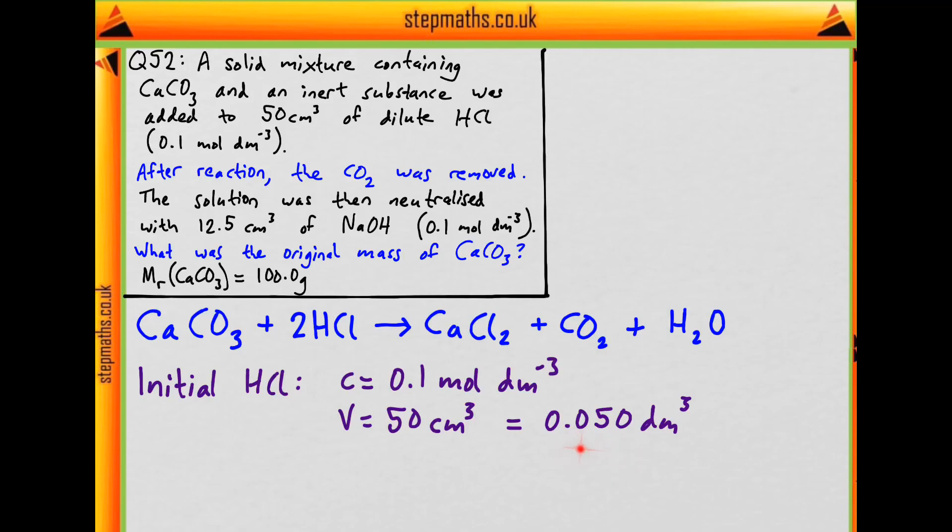How do we work out the number of moles from this? Remember that n equals cv. So putting the numbers in gives 0.1 mol per dm³ times 0.05 dm³. Times by 0.1 is the same as dividing by 10. What does this come out as? 0.005 moles of HCl initially.